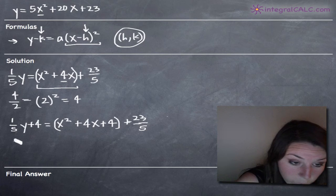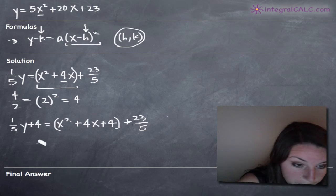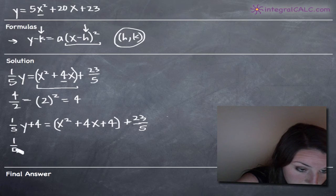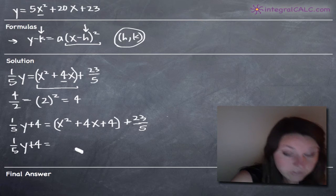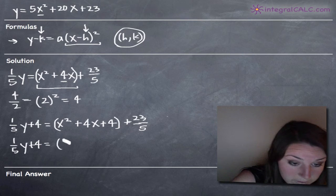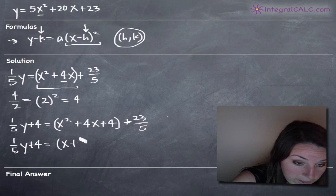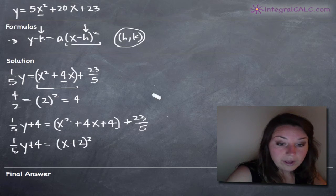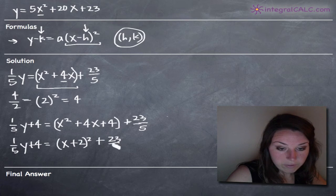So now we can write our x terms here in the following form. We can factor. If we factor this, we'll get x plus 2 times x plus 2, which means that we can write it as the quantity x plus 2 squared. So then of course, we'll leave that 23 fifths alone for now.